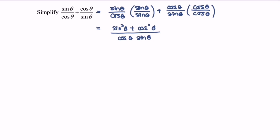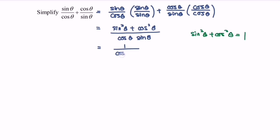Next, we take note of the basic Pythagorean identity: sin²θ plus cos²θ equals 1. So this simplifies to 1 over cos θ · sin θ.